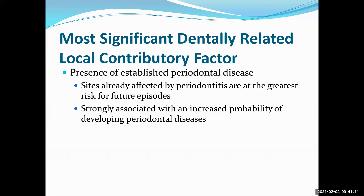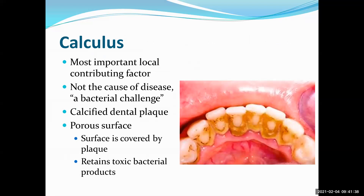If you've had disease there before, the likelihood that you're going to get disease there again is pretty high — it's a susceptible area, strongly associated with an increased probability of developing periodontal disease. Calculus is not a primary causative factor, but it's a local contributory factor because calculus always has biofilm on top of it. It's a porous structure with tiny holes and channels — like a hard sponge — that collect bacteria.